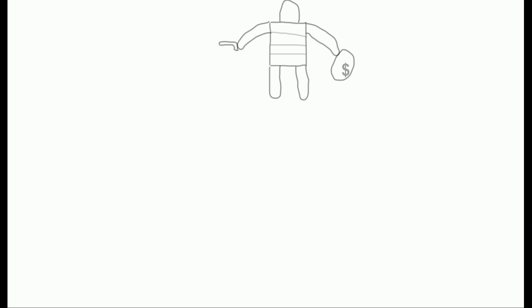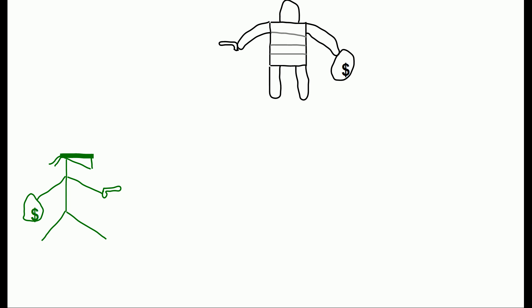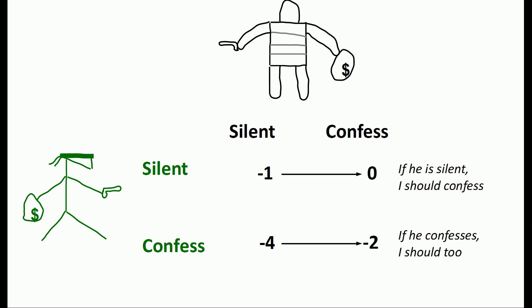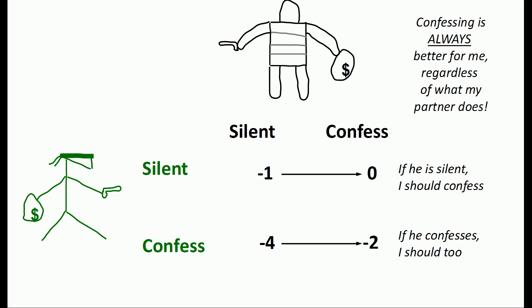How did that happen? Well, just as you were thinking about the problem, so was your partner. He was wondering about his actions relative to your decision. He thought about what would happen if you confess, and considered staying silent or confessing. He realized it was better for him to confess if you confess, and also better to confess if you stay silent. So he has a dominant strategy as well, which is to confess.